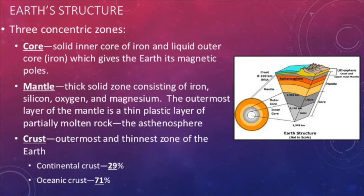Next, we have the mantle. It is the thickest layer and is made up of mostly silicon, iron, oxygen, and magnesium. This layer is a plastic liquid, meaning that it flows. The flowing of heat through the mantle creates what we know as convection currents.